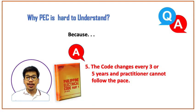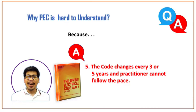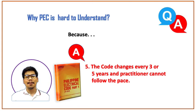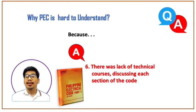The fifth reason why PEC is hard to understand is that the code changes every 3 to 5 years and practitioners cannot keep up with the pace of changes. We are lucky because the last edition of PEC 1 was in 2009, followed by 2017, and nothing has come out yet as of 2022. The sixth reason is the lack of technical courses that explain PEC in layman's terms — covering the application of the code and the reasoning behind its articles, chapters, and sections.